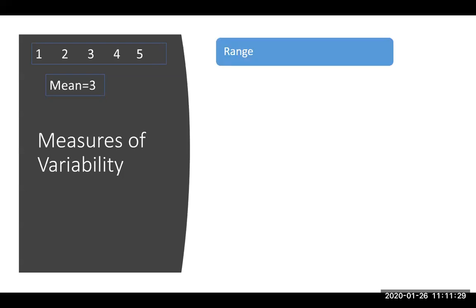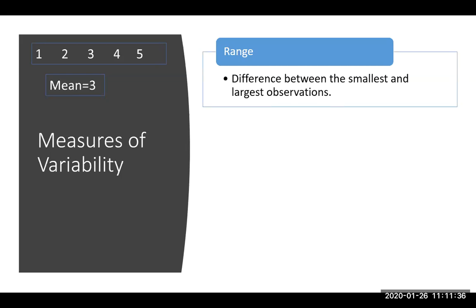The first one we have is range. I'm pretty certain you've been introduced to the topic of range before in high school. So the range is defined as the difference between the smallest and the largest observations. So if I look at my example here, the smallest amount of money someone had in their pocket was $1. The largest amount was $5. So we see they have a range of $4.